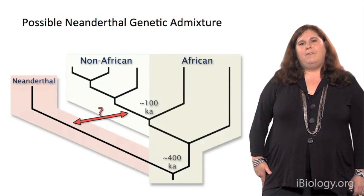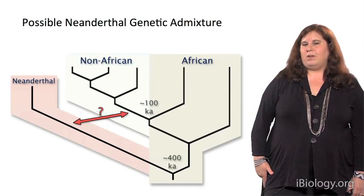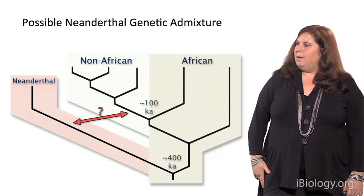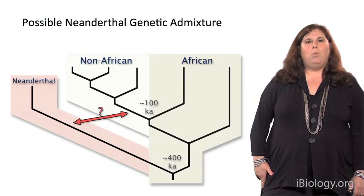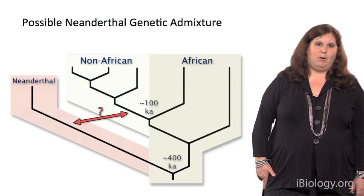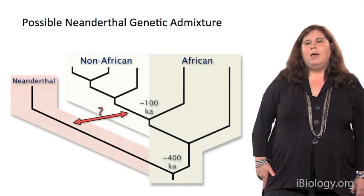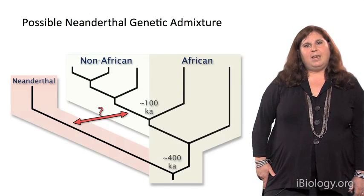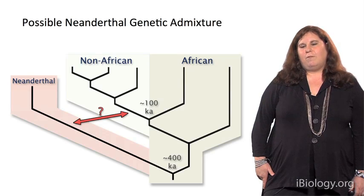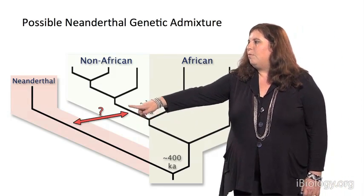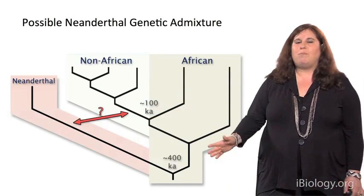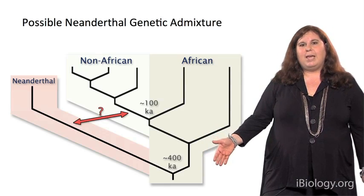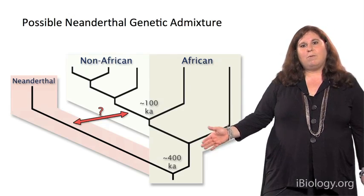Furthermore, it has been estimated that there may have been a small amount of admixture between Neanderthals and anatomically modern humans, as shown by this red arrow. The estimated amount of admixture is about 1% to 2% of the modern human genome may be of Neanderthal ancestry. What is of interest is that this is only present in non-Africans — it is not present in African genomes. We can infer that this admixture event probably occurred before modern humans spread across the globe, perhaps in the Middle East, which is why it's present in all non-Africans but absent in Africans.